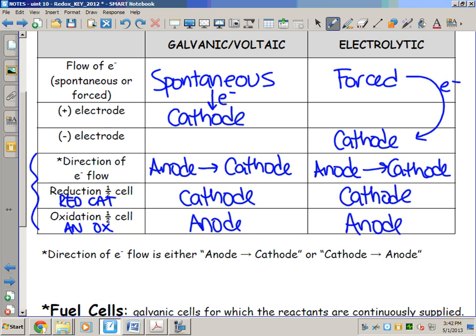We're forcing billions of electrons onto the cathode per second, faster than the ions in solution or the molecules can take them off. They're not being attracted to the cathode spontaneously, they're being forced onto it, so it's the negative electrode.